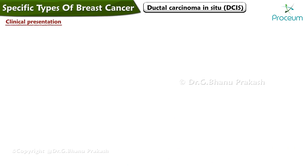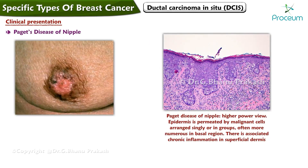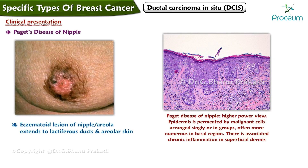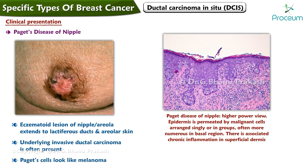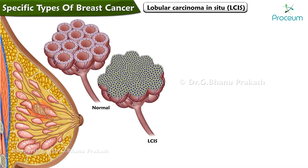Ductal carcinoma in situ is typically asymptomatic but may present with nipple discharge or a palpable lump. Paget's disease of the nipple is an eczematoid lesion of the nipple or areola that is basically a ductal carcinoma in situ that extends to lactiferous ducts and areolar skin. An underlying invasive ductal carcinoma is often present. Paget cells resemble melanoma — large cells surrounded by a clear halo that invade intraepidermally.